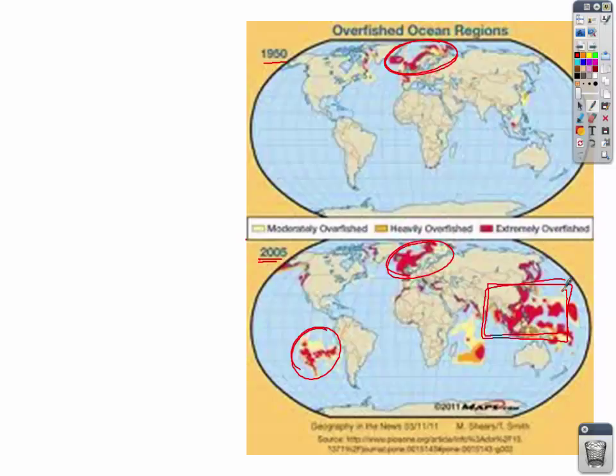A study just came out in Nature, a prominent publication of science, showing a big decline in large predatory fish caught over the past 50 years. We're seeing the life of the ocean, the ecosystem, deteriorating.